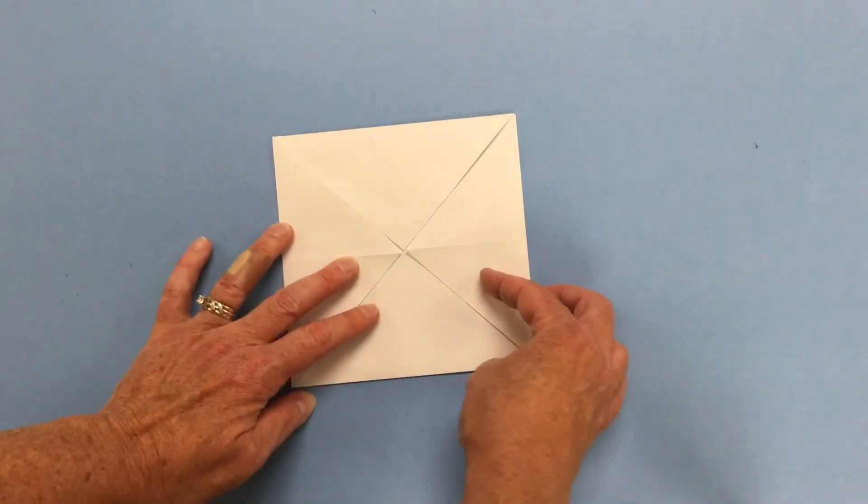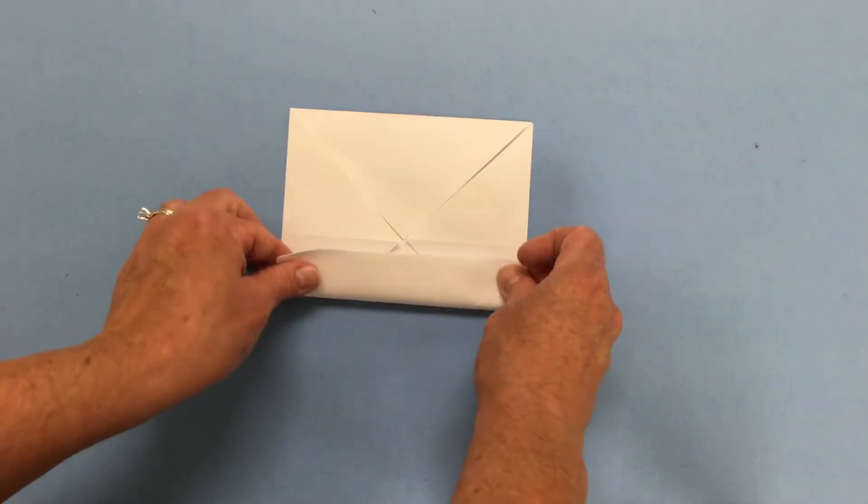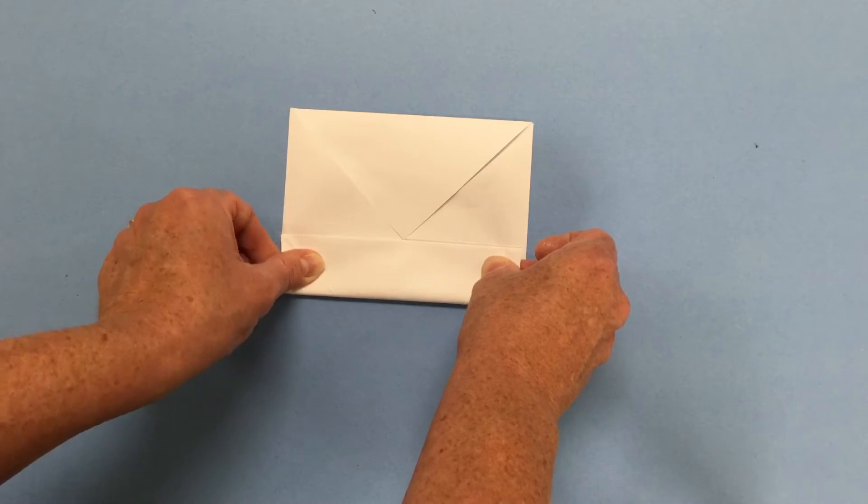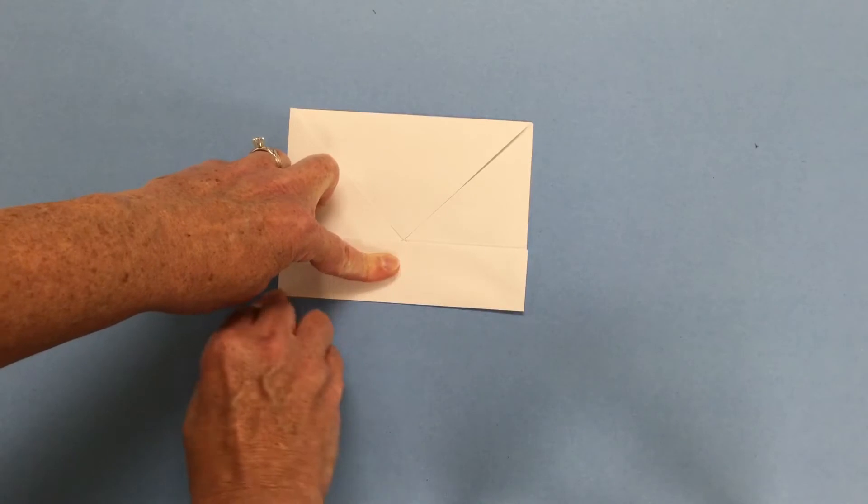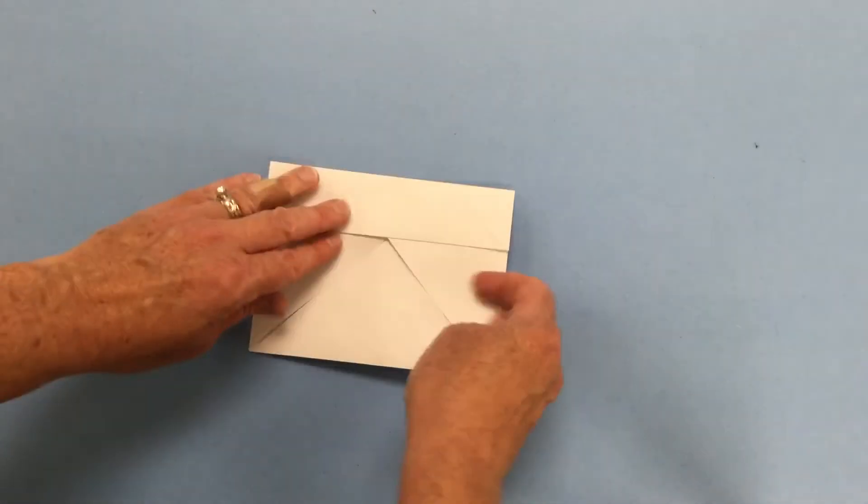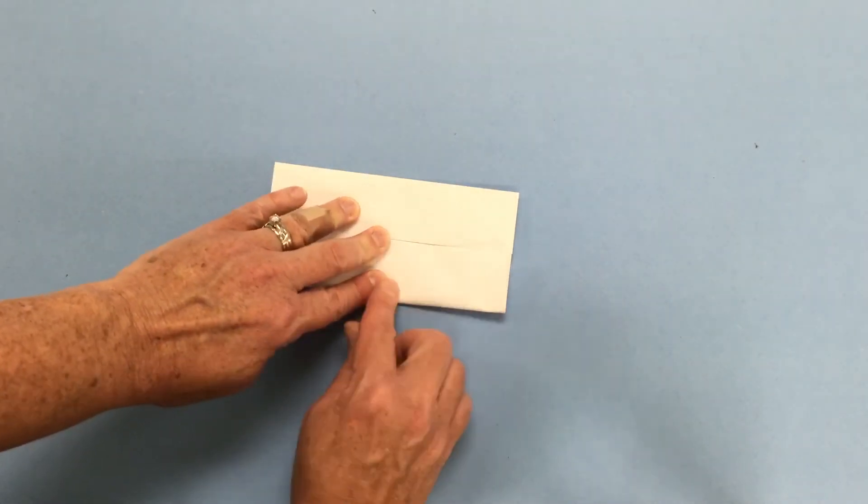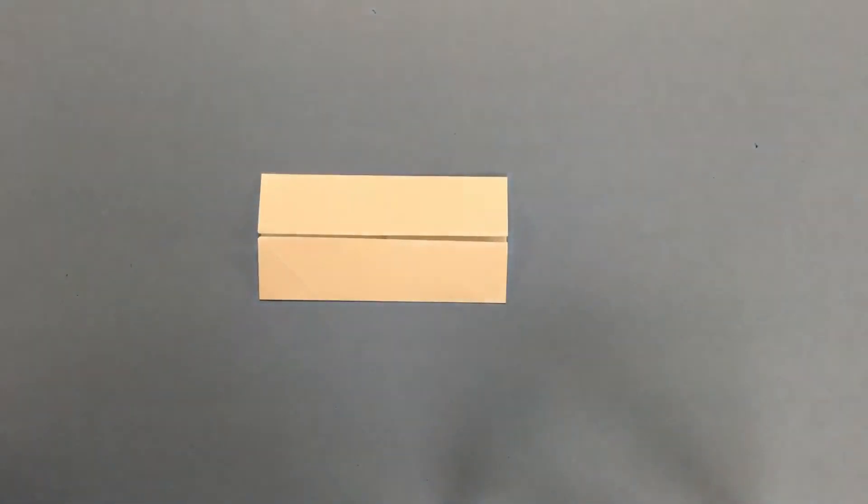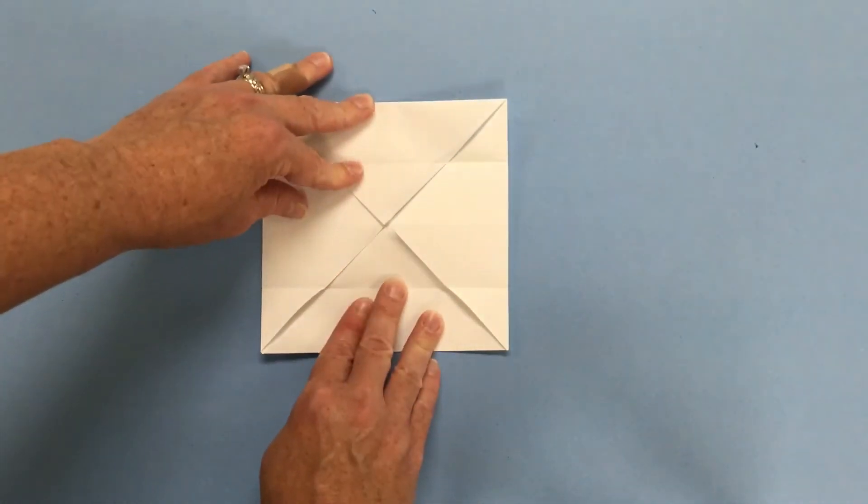The next thing we're going to do is bring the bottom edge, this bottom fold, up to the middle of our paper. So it's going to go right where those corners are meeting and we're going to put a good strong crease right there. It's good to go over these creases a couple times. Then we're going to flip this over and do the same with the other side. Fold that to the middle, give that a nice strong crease. Then we're going to unfold those two that we just folded.